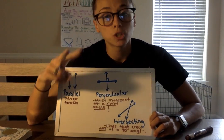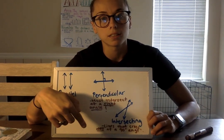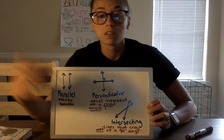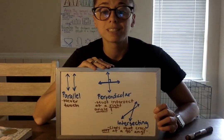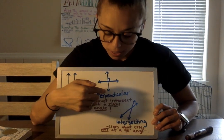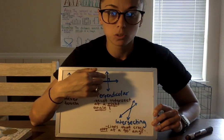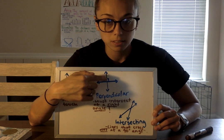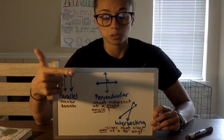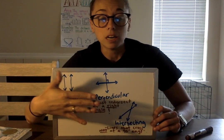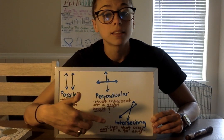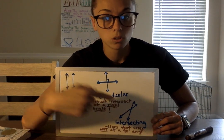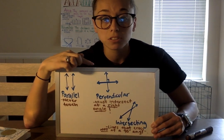Perpendicular — the two tricky ones are going to be perpendicular and intersecting. Perpendicular lines intersect, meaning they go through each other, they touch, they cross. But perpendicular lines have to intersect at a right angle. You see how it makes a little square — that symbol shows a right angle, meaning 90 degrees. Whenever you see an angle with that little square symbol, that's telling you it's 90 degrees, a right angle. If it does not intersect at 90 degrees, then they are just intersecting lines.